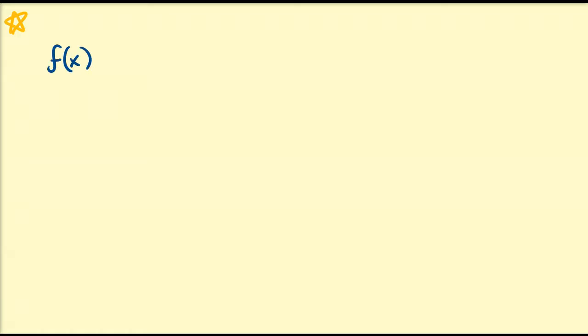Hello there. In this video we're going to investigate a particular type of rational function sometimes referred to as the Möbius transformation of some complex number. We're going to represent this rational function as f equal to ax plus b divided by cx plus d. Most of the time a, b, c, and d are considered complex numbers, and x is sometimes referred to as a complex variable. We're going to assume, without loss of generality, that x is some complex random variable.